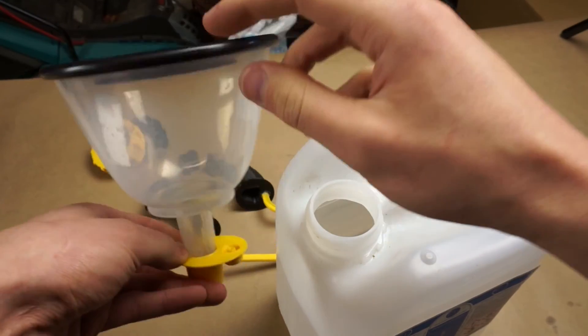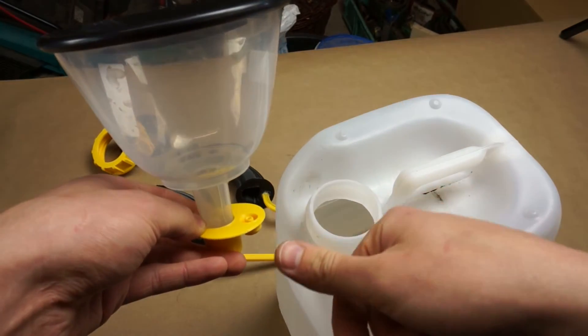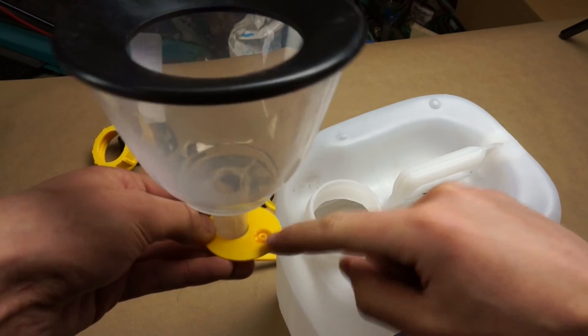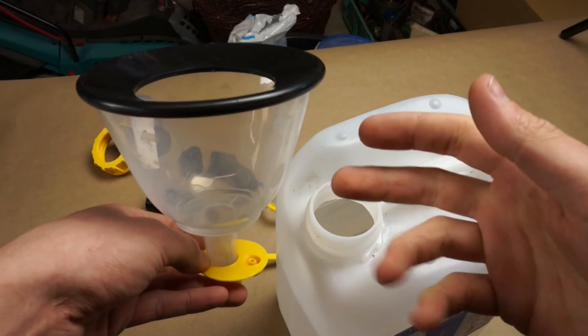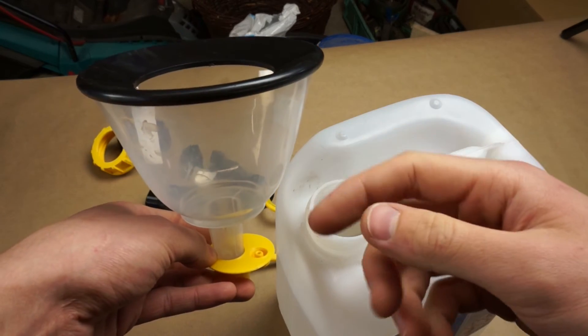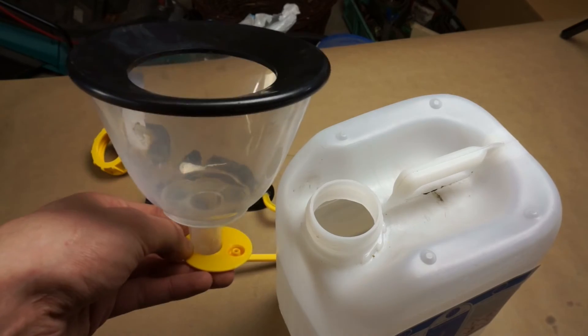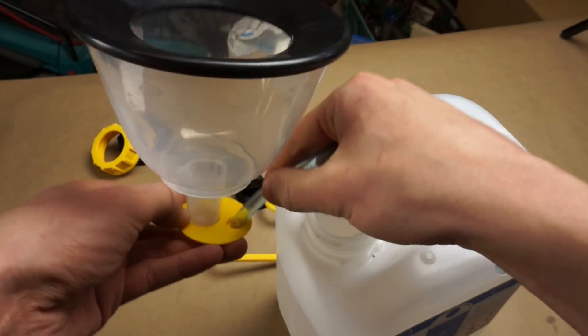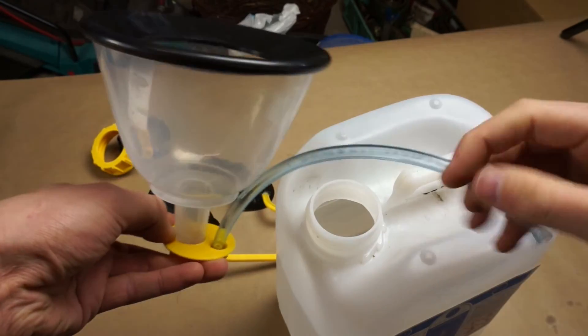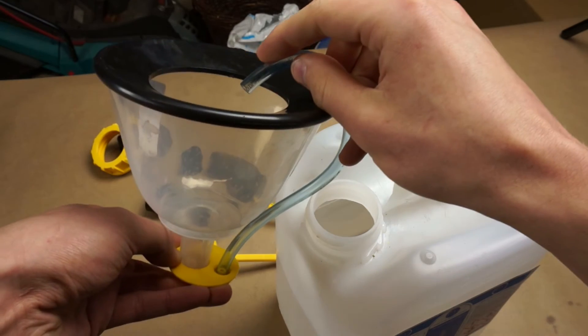Now of course if you're filling fluid into the canister the air needs to be able to get out so that's what this small hole is for and the problem I've had with the Evaporust is that it starts to foam up and then foam starts coming out of this hole. So this hole also accepts a six millimeter plastic hose so you can use that to redirect the foam back into the funnel.